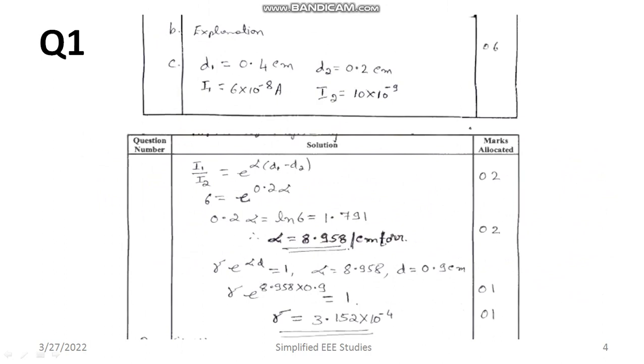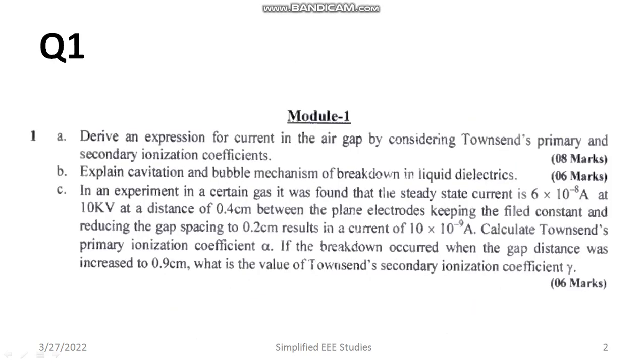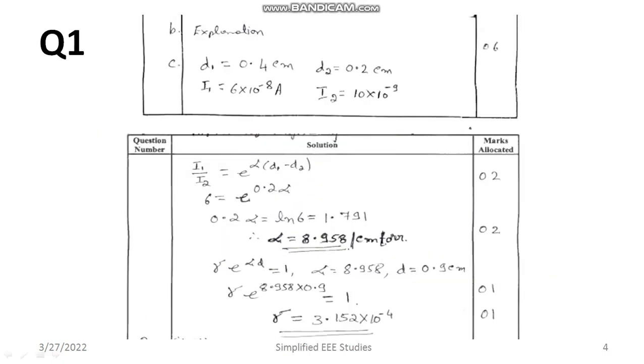Now 8.958 centimeter per centimeter torr, or centimeter raise to minus 1 torr raise to minus 1. Afterwards you can apply the condition for maximum breakdown. Gamma into e to the power alpha is equal to 1. From this you can calculate the value of gamma. Gamma is nothing but Townsend's secondary ionization coefficient. You can see the marks division. Don't miss not even a single step. Try to elaborate it properly and get the marks. That is regarding question 1.